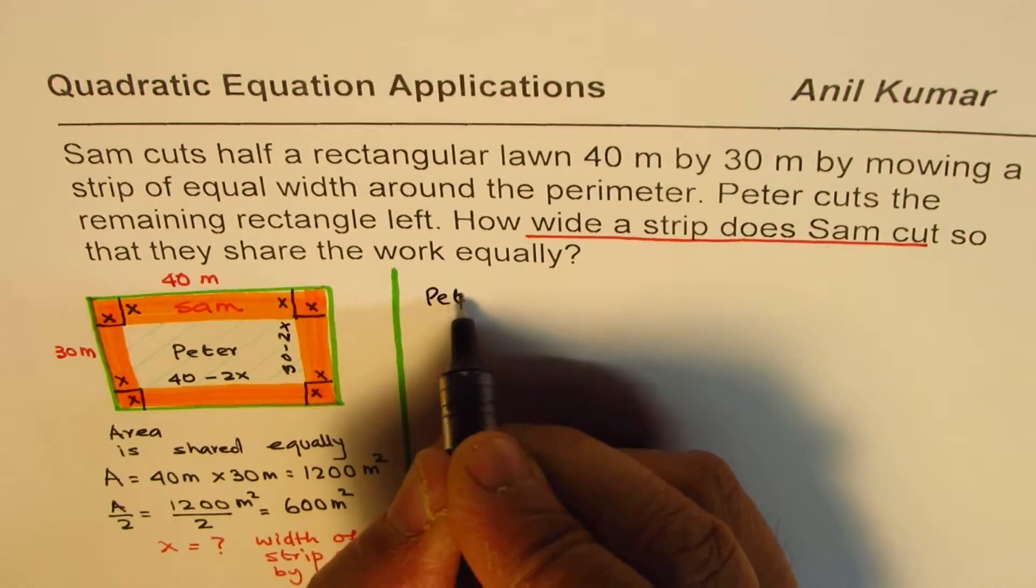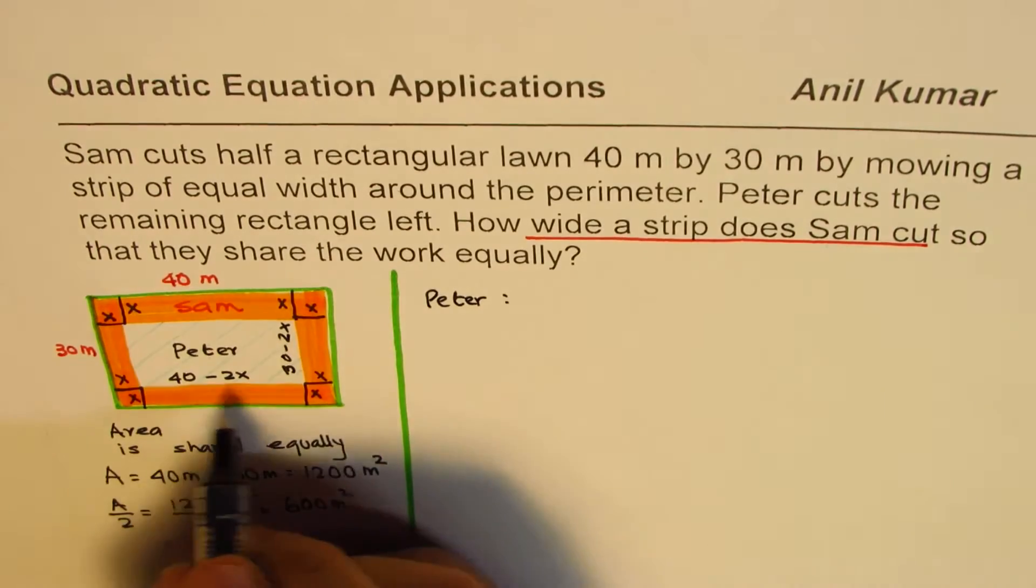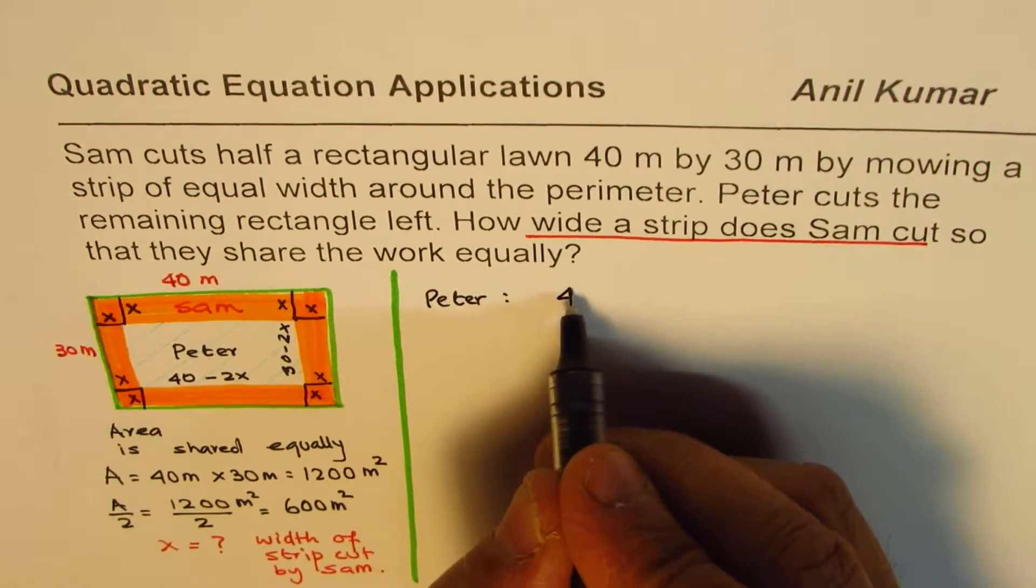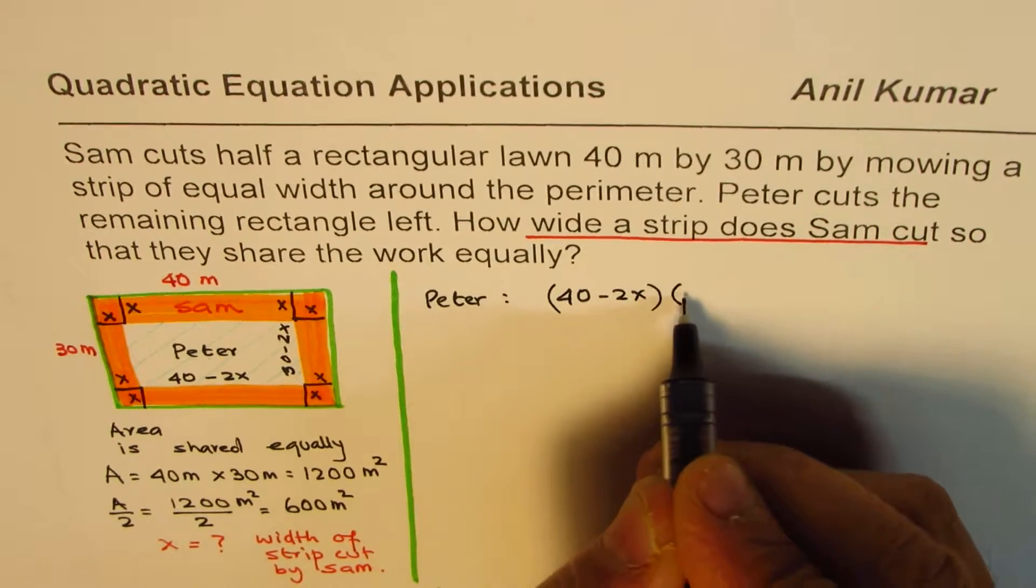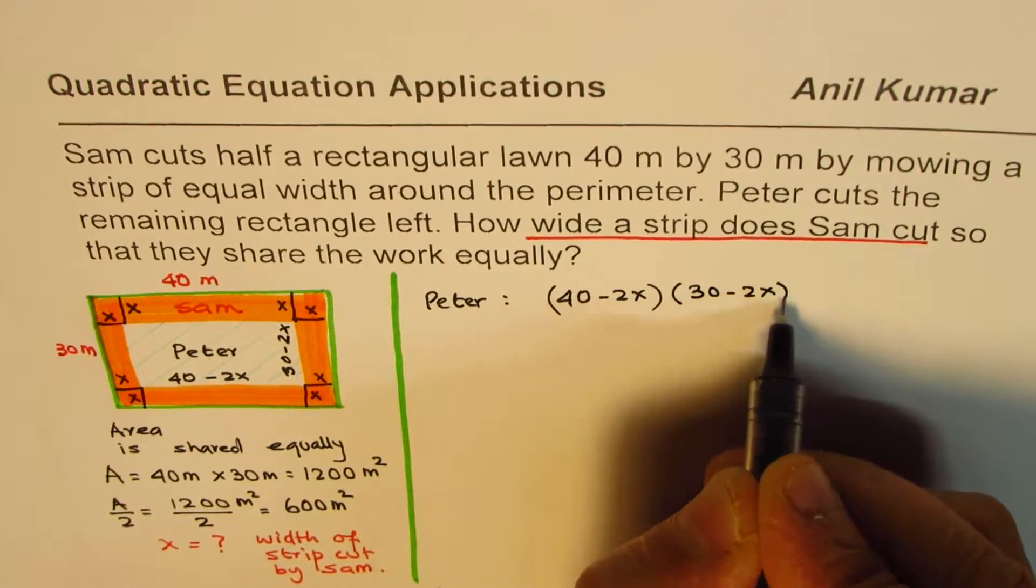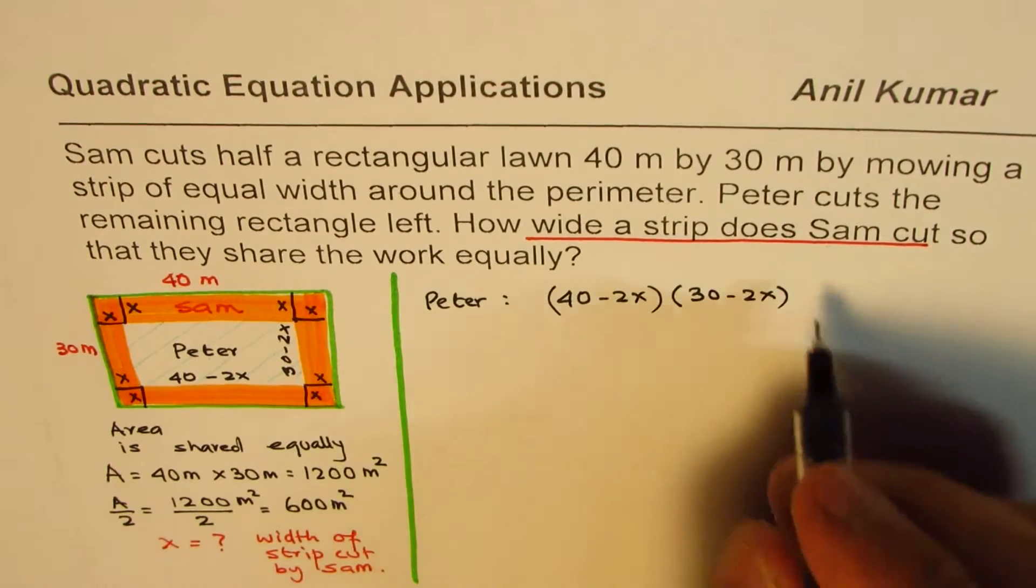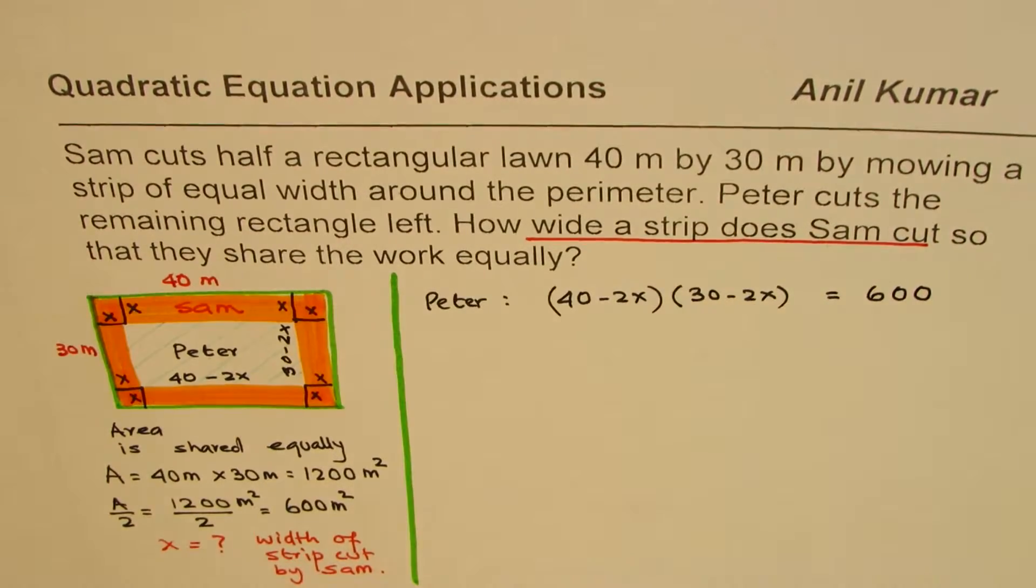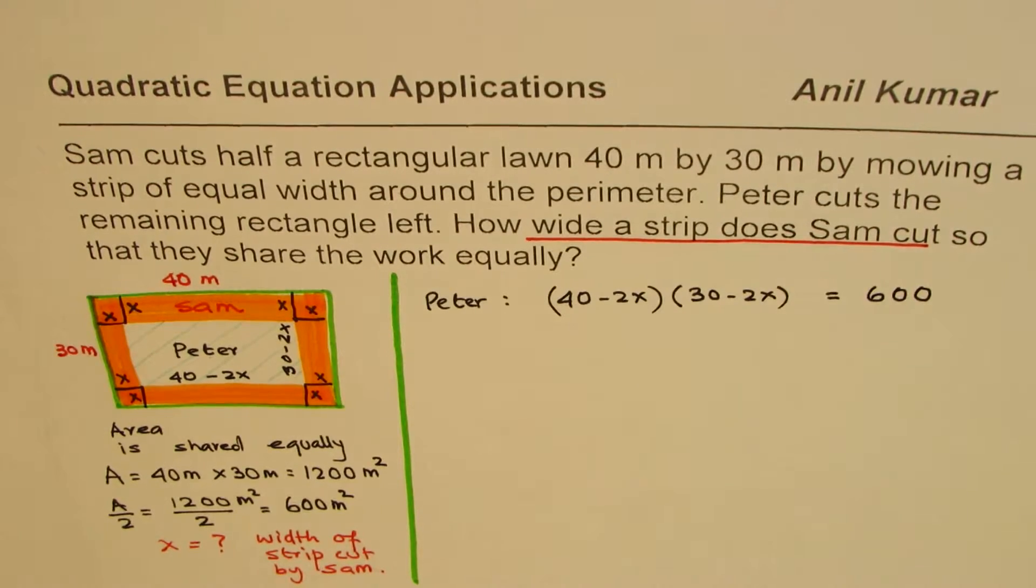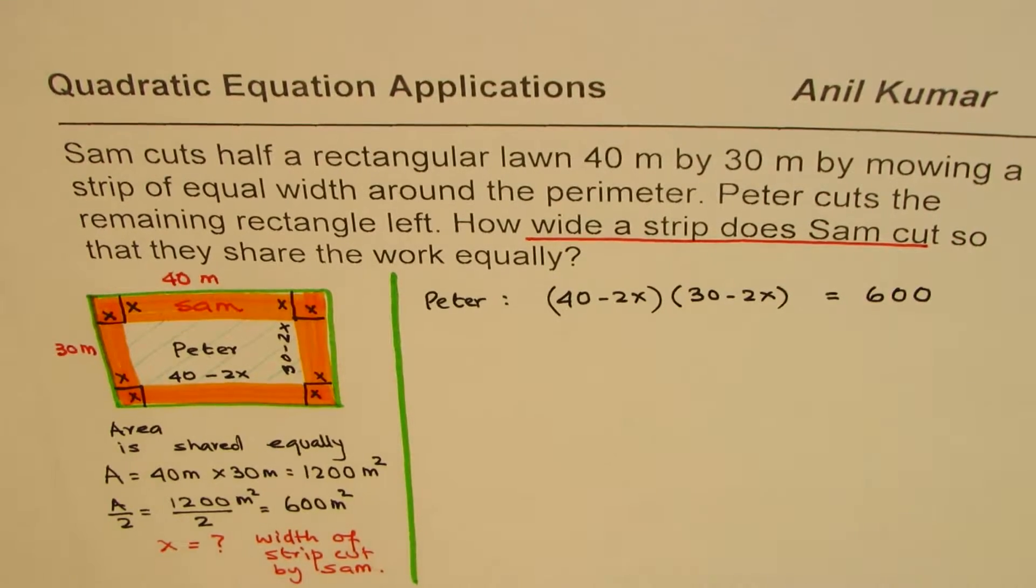Since they are sharing the job, that should be equal to 600 meters squared. Does it make sense? That is the equation. Only one variable, so we can now open this equation and solve for the variable.